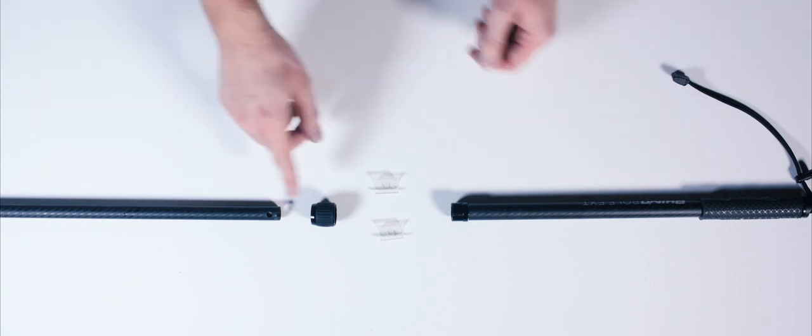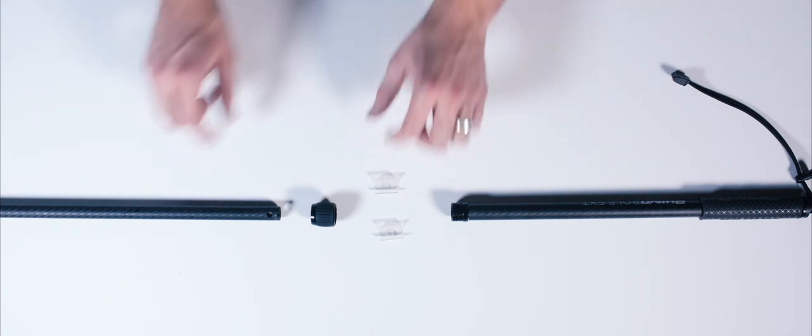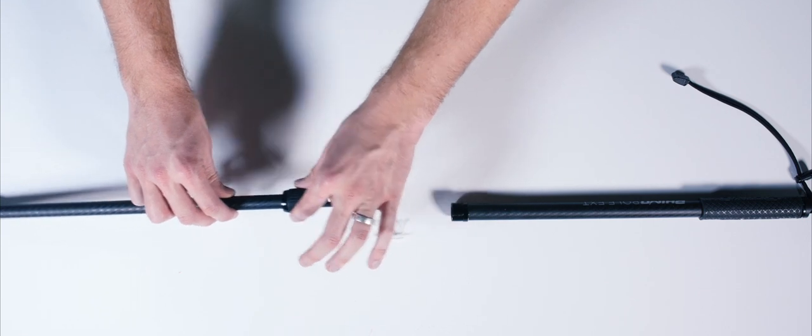We have the pole in two parts, the locking collar and the stopper in two halves. Let's slide the locking collar onto the skinny half of the pole.